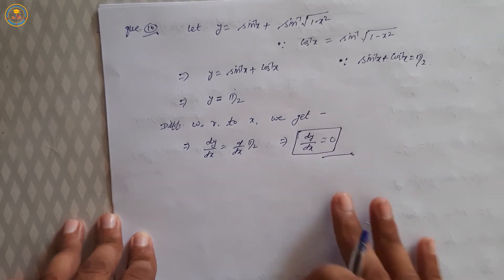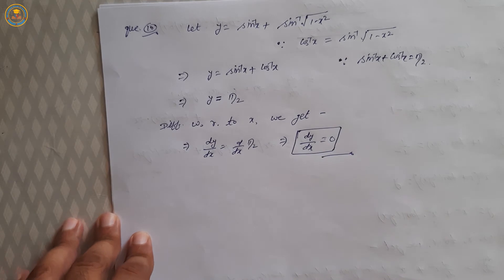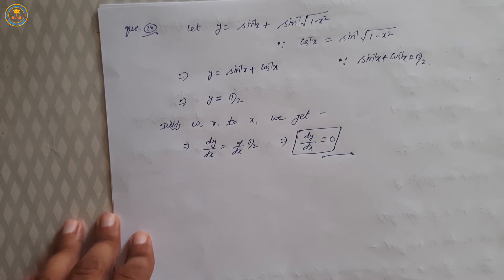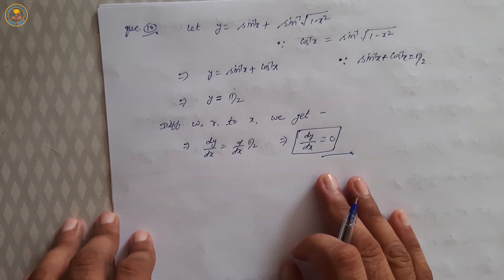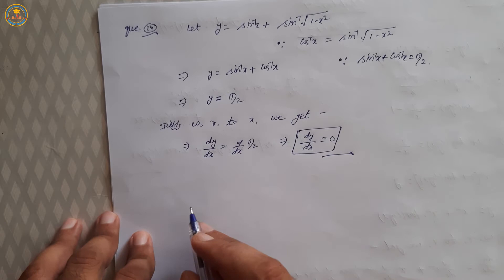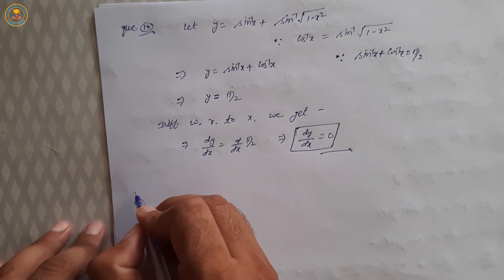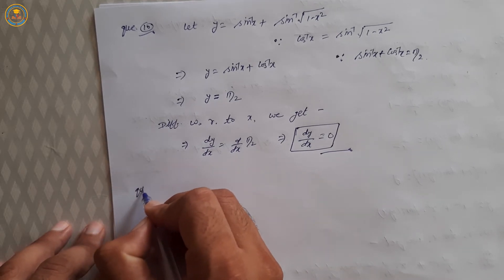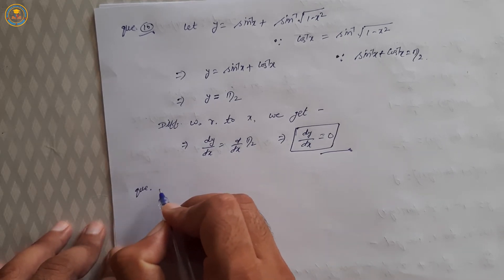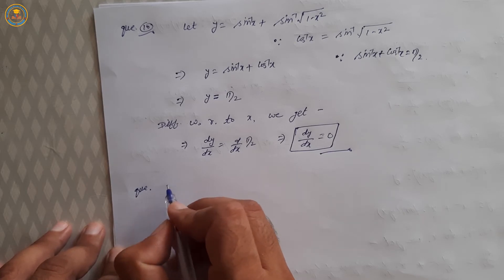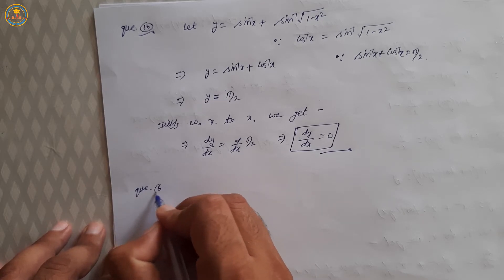dy by dx is equal to 0. That is the answer.